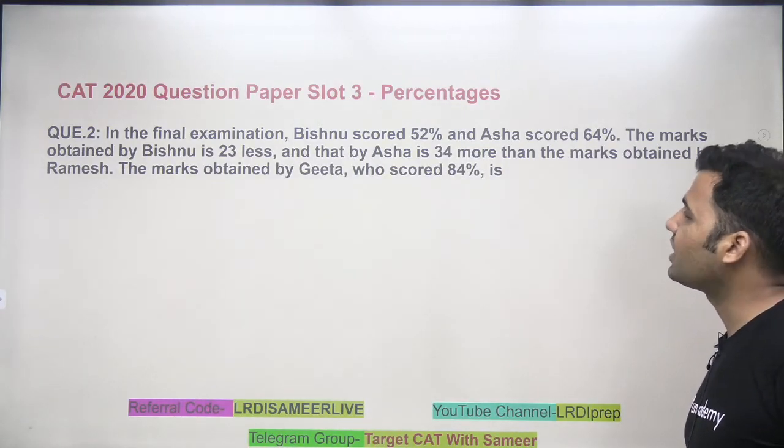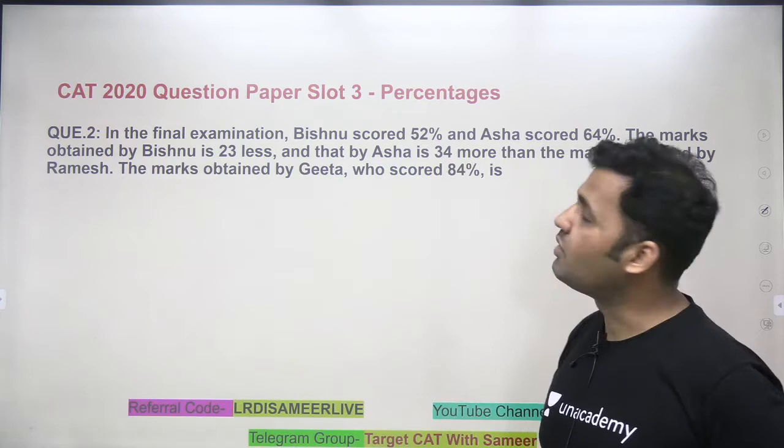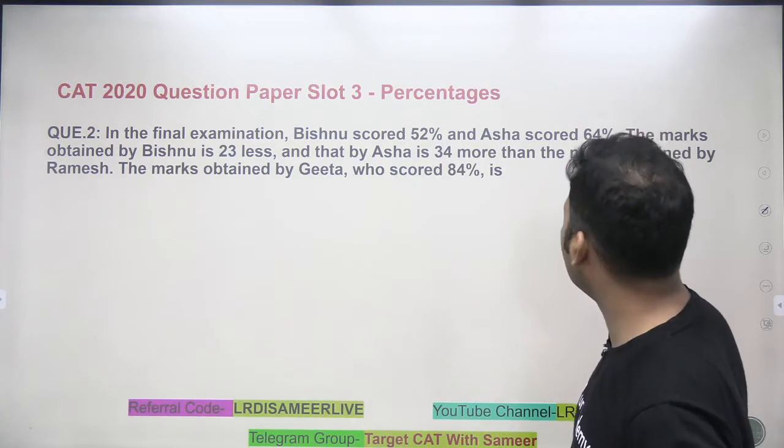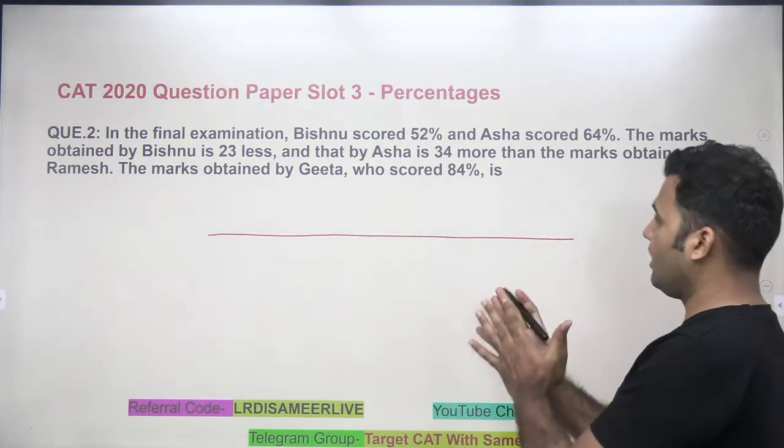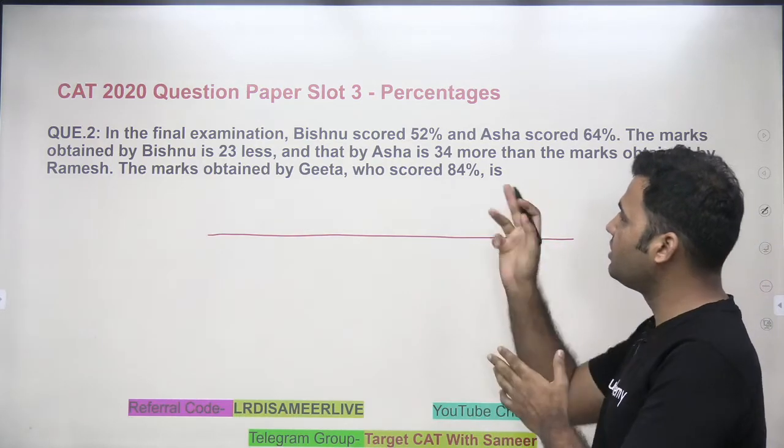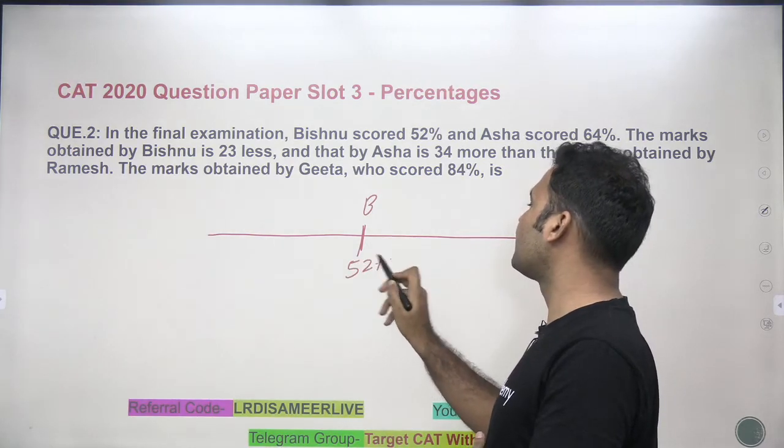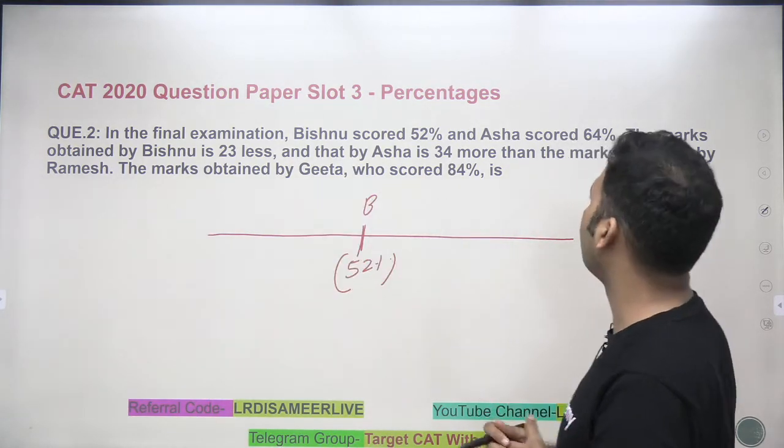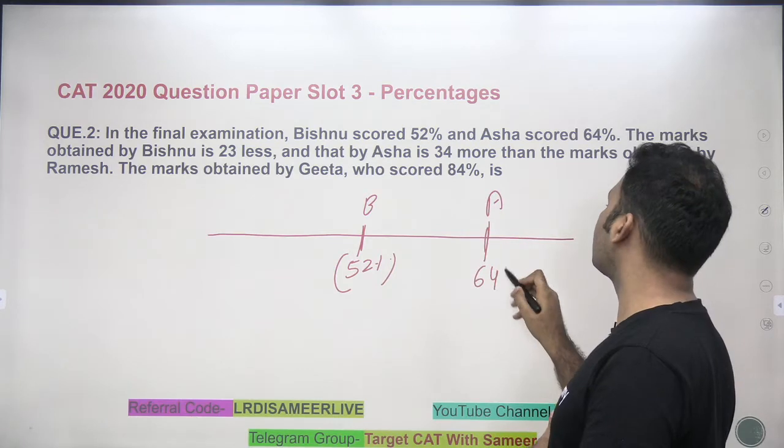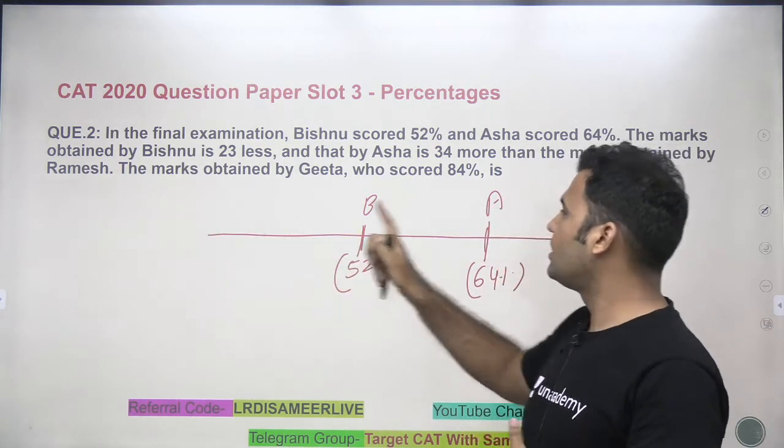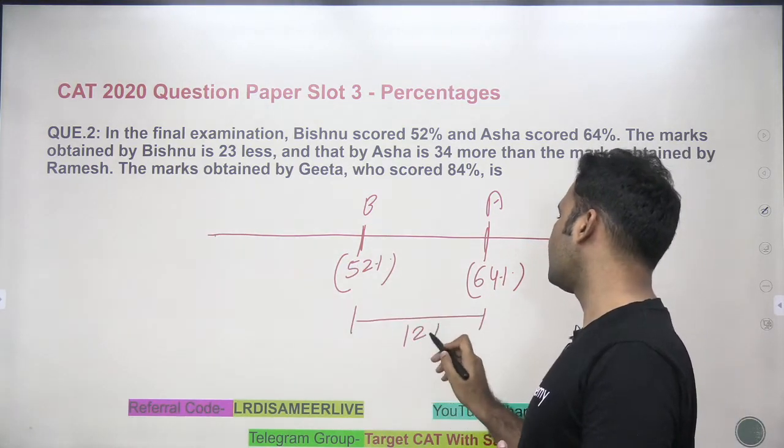Now let's look at the next question, question number 2 from percentages. Again, a basic question. Even a 6 standard guy, a person studying in 6 standard can do this question. Final examination, Bishnu scored 52%, Asha scored 64%. What does it mean? Now let's say this is my number line, or you can say the marks line of this final examination. Now Bishnu scored 52%. That means, let's say this is the mark of Bishnu. Bishnu is 52%, so that means Bishnu is scoring 52% of this whole number line. Asha is scoring 64%, so Asha will be ahead of Bishnu. Asha is scoring 64%. That means this line from this to this is 64%. From this to this is 52%. So can I say from this point to this percent, it is 12%, right?